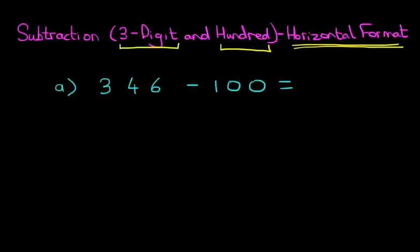Let's look at the number 100. We've got zero units and zero tens. So zero, zero. So therefore in the number 346 we've got six units and four tens. That means that these two digits do not change because we are subtracting zero.